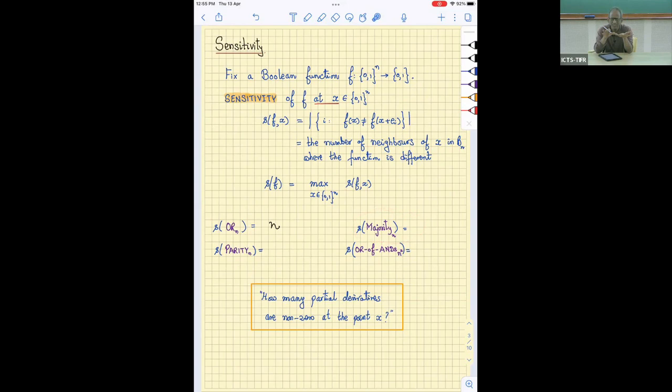Majority. If the input is all zeros, if you change one of the bits from 0 to 1 when already all the bits are 0, is it going to change the majority? No. But when there's exactly half of the inputs that are 1, and half of them are zeros, then changing maybe any of those zeros to 1 will change the majority. So the sensitivity there is n over 2.